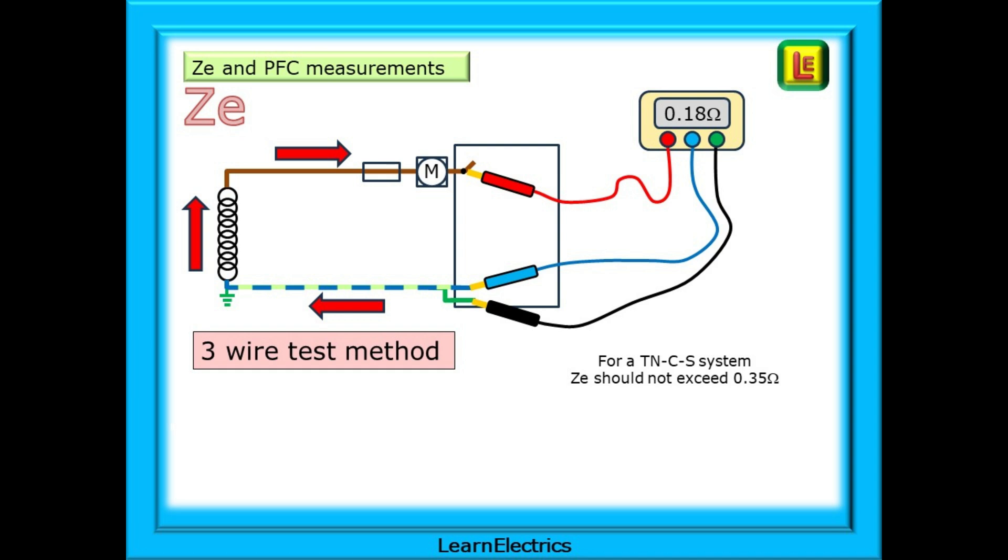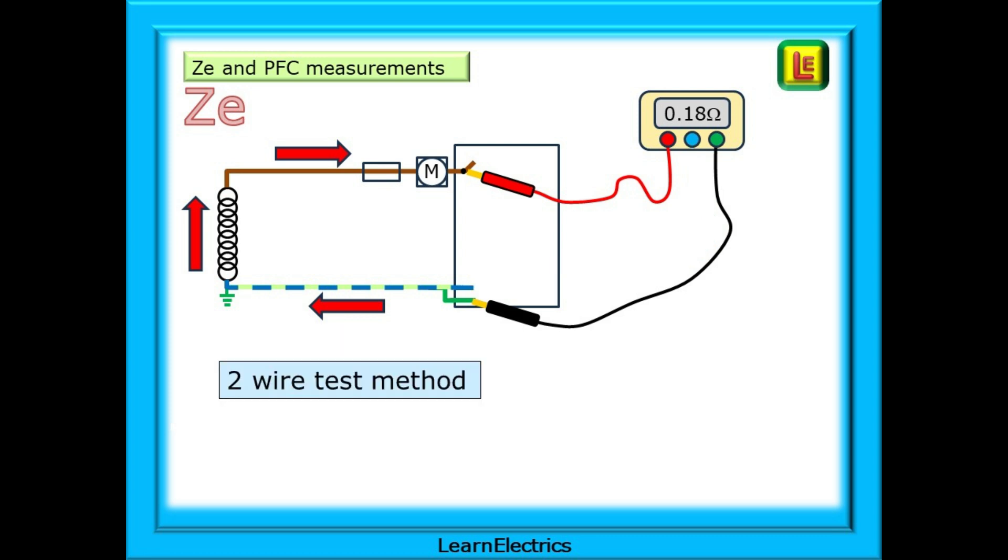This is the only ZE for this installation. For a TNCS system as shown, ideally this should not exceed 0.35 ohms. Some test meters can test using only two wires. They do not need the neutral test lead to be connected. And in theory we should get the same reading for ZE. Whichever meter type you have, ensure that you know how to use it before your assessment day. Practice, practice and practice some more. The time to learn how to do the tests is now, not when you are stood in front of the assessor.